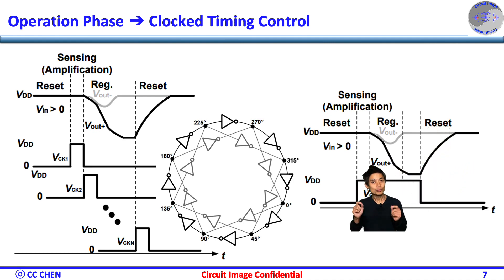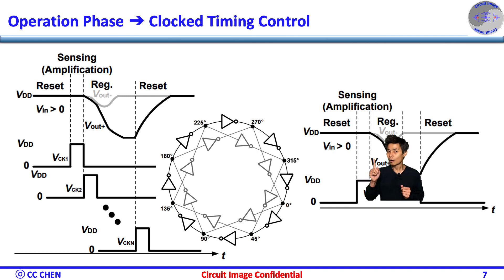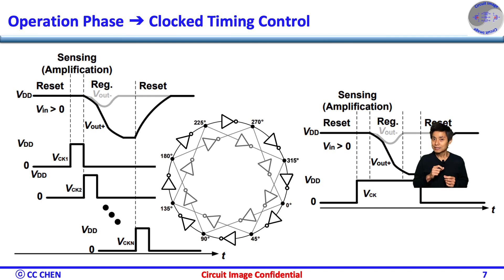For example, the clock's rising edge would enable the input to start to sense the tiny differential swing. Right after a short period of time, the latch will enter the regeneration phase while the clock is at the period of logic 1. Lastly, at the clock's falling edge, the latch will disable the regeneration phase and enter to the reset phase and wait for the next rising edge.